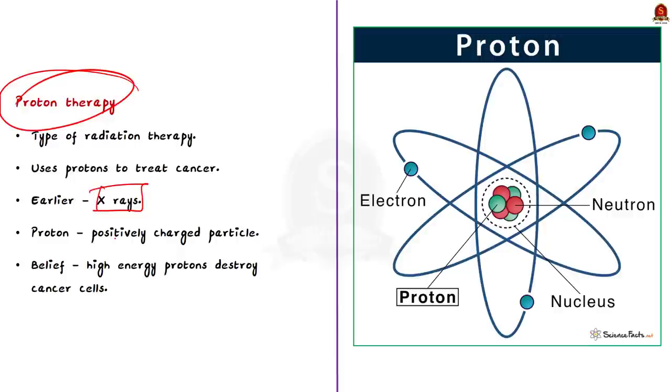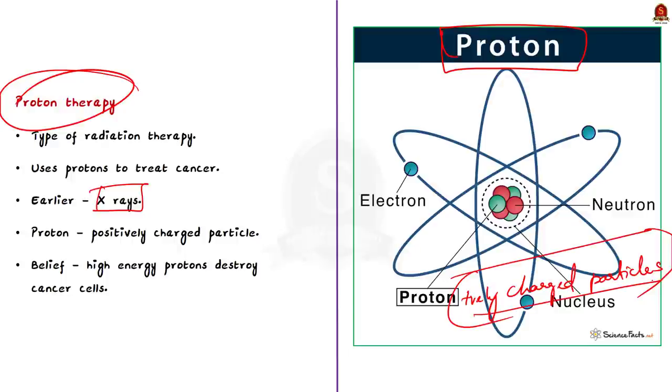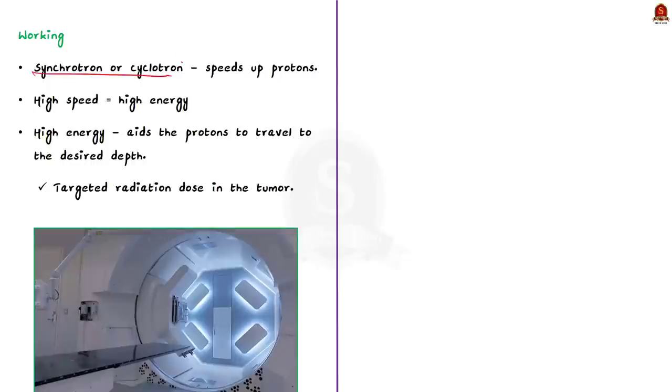Now before understanding how this proton therapy works you must know about protons. We all know about protons right. It is a positively charged particle. At high energy protons can destroy cancer cells. So this proton therapy is a treatment that uses high powered energy to treat cancer and some non cancerous tumors. So how does this proton therapy work? There is a machine called synchrotron or cyclotron that speeds up protons. This high speed of the protons create high energy. This energy makes the proton travel to the desired depth in the body and the protons then give the targeted radiation dose in the tumor.